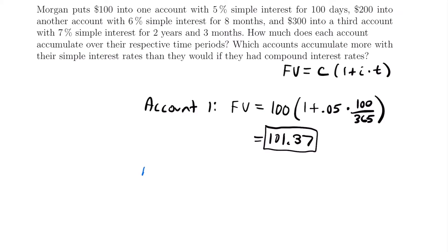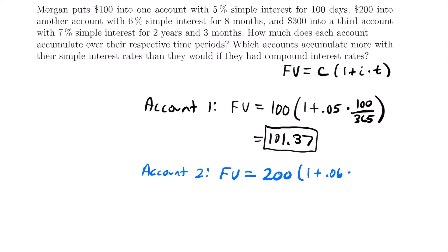Now let's look at account number two. She puts $200 with a 6% simple interest rate for eight months. The future value equals $200 times 1 plus 0.06 times the amount of time. Our time is given in months — eight months — so we need to convert to years. Since there are 12 months in a year, we write this as 8 divided by 12. Calculating this gives us $208.